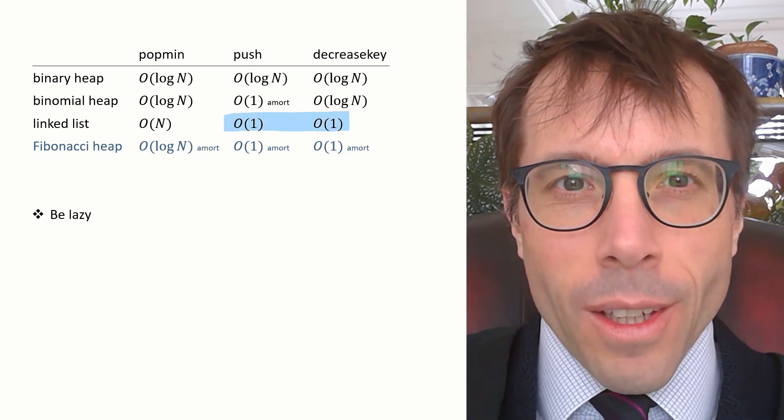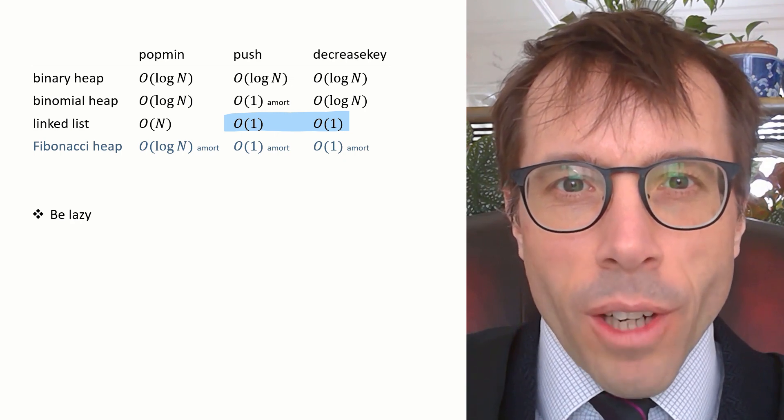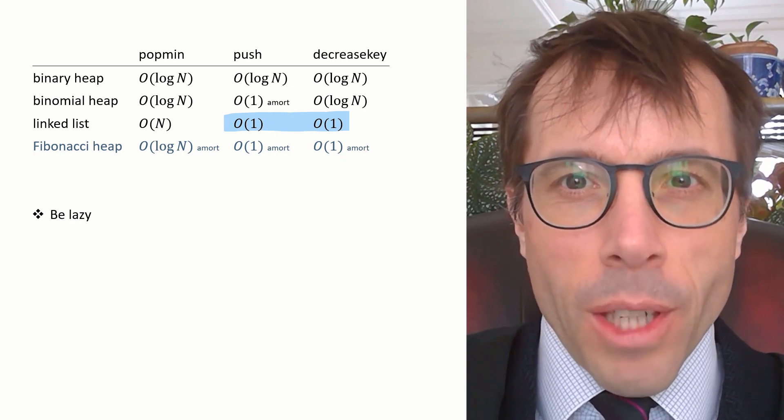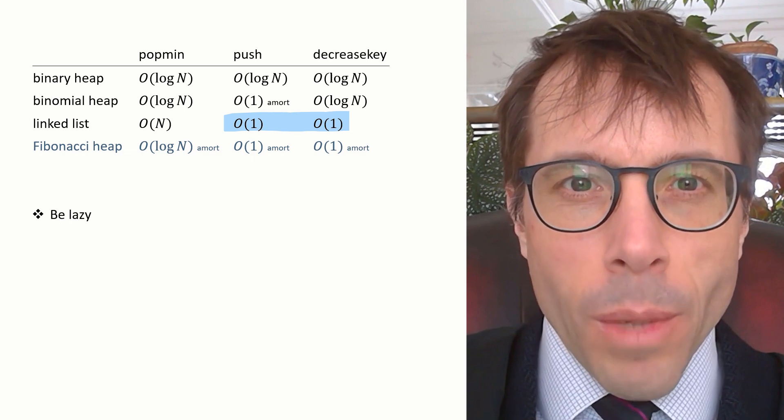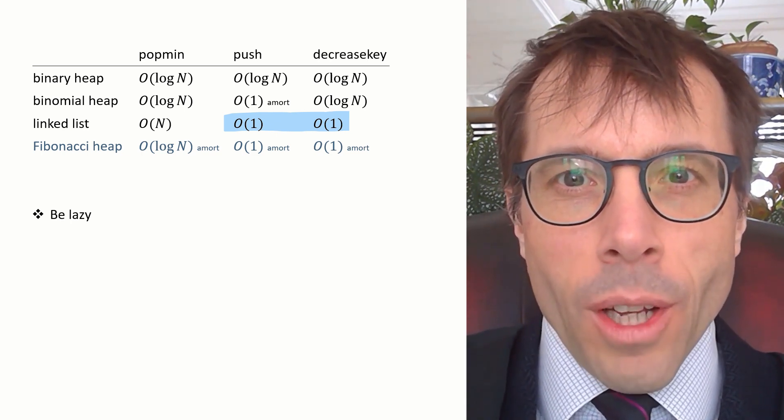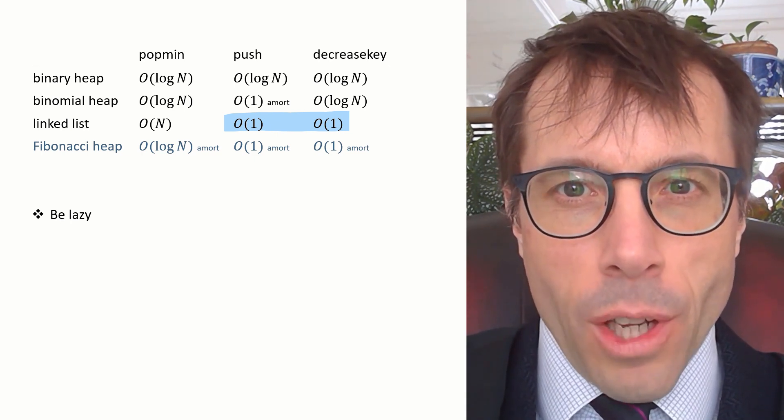Let me highlight some of the lessons to draw from these different implementations. First lesson, be lazy. If you want to be really fast, you don't have time to go around keeping your data structure pristine all the time. You have to be able to just dump stuff around the place like the linked list implementation does.